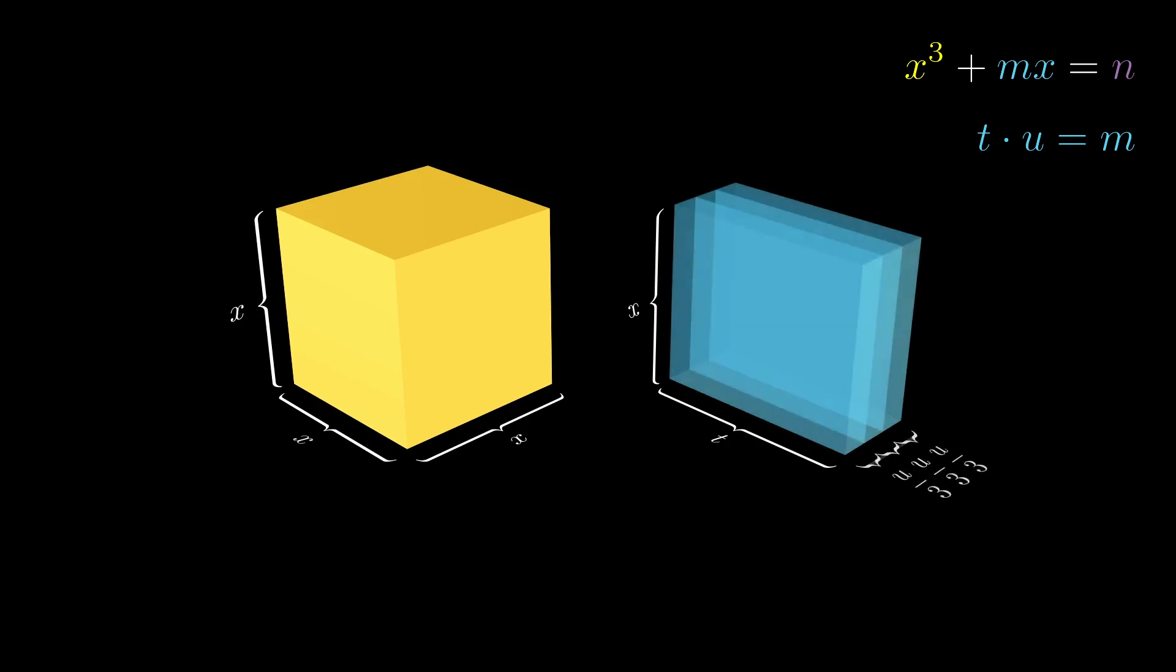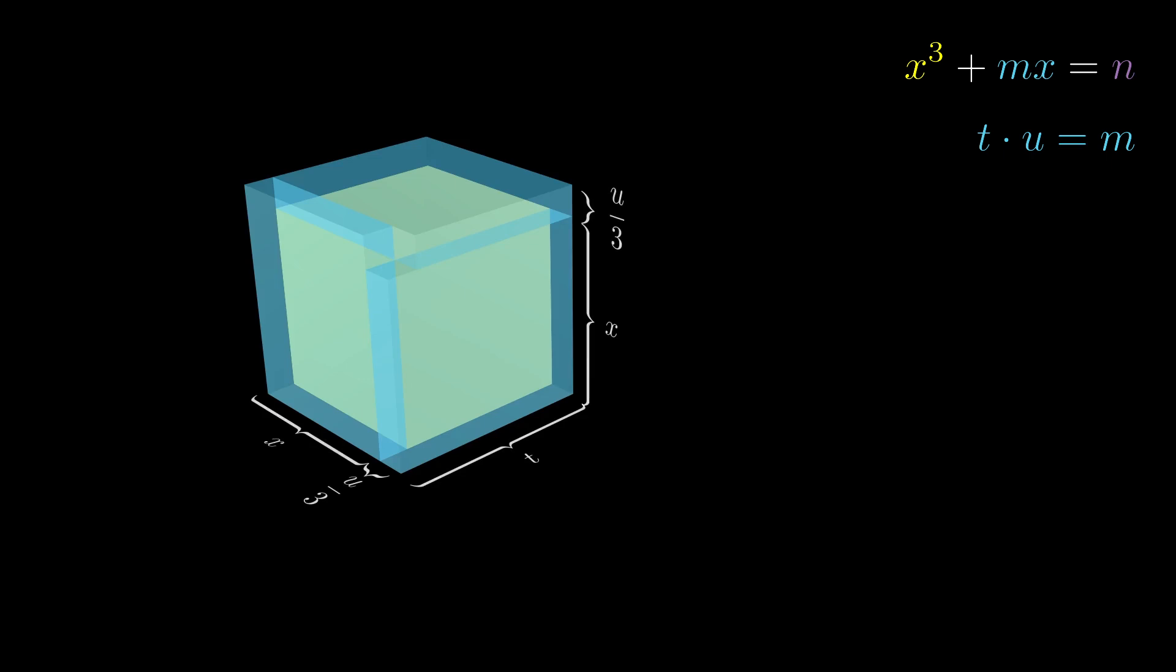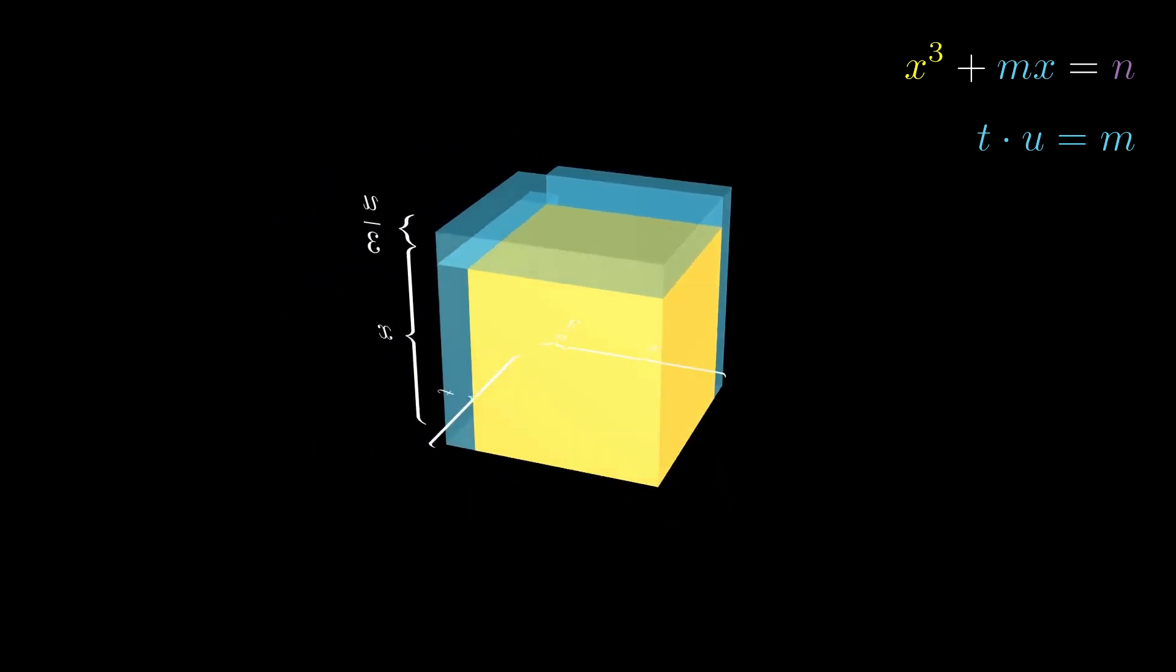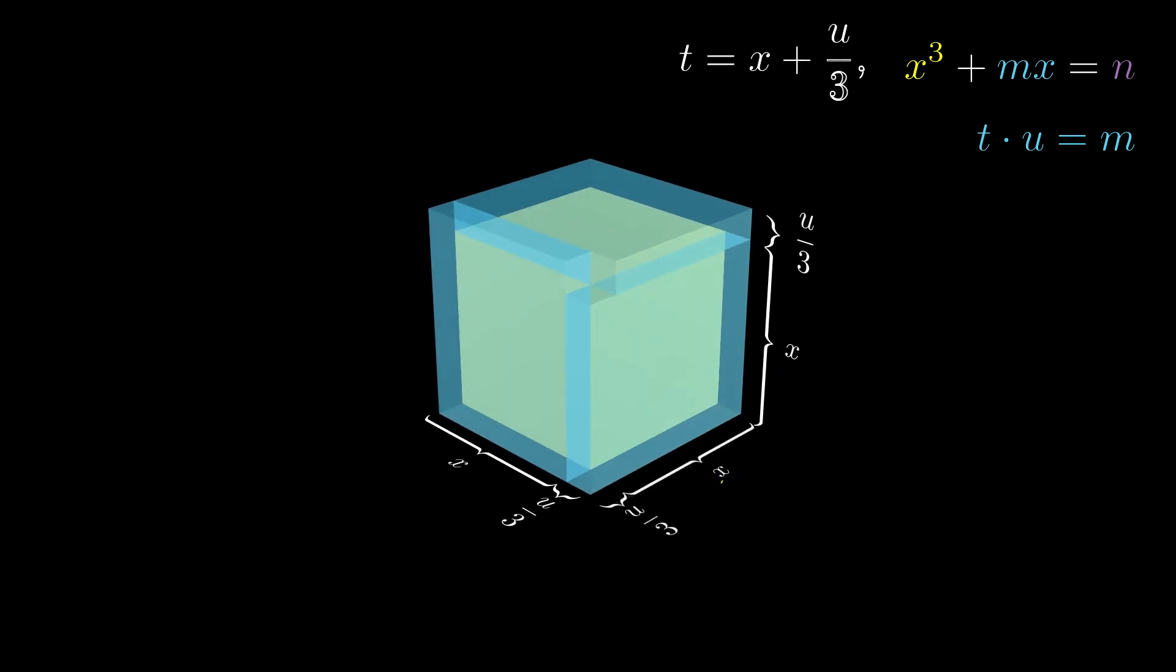Number two, when we split the blue prism into three equal pieces and slap them onto the yellow cube, we should get an almost complete cube like this. Doing this, we notice that t is equal to x plus u/3. To calculate the volume of the shape, we can take the volume of the entire cube, which equals t³, and then subtract the empty spot on top, which basically is (u/3)³.